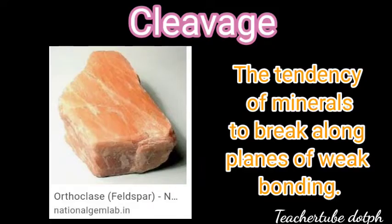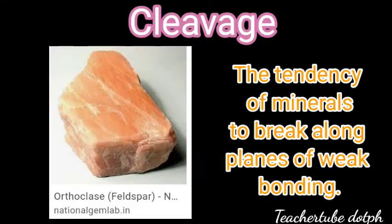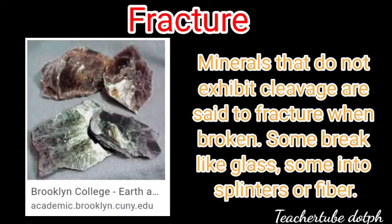The next physical property is cleavage — the tendency of minerals to break along planes of weak bonding. It is described by the number of planes exhibited and the angles at which they meet. You can see here the sample rock; it is a type of feldspar called orthoclase. You can see the planes of weak bonding — soon this mineral will break, and this is called cleavage.